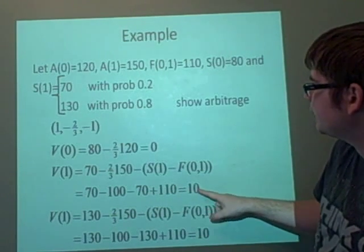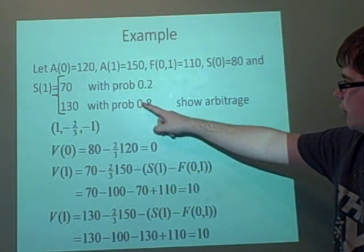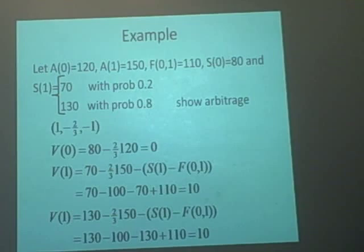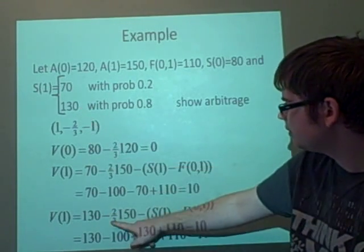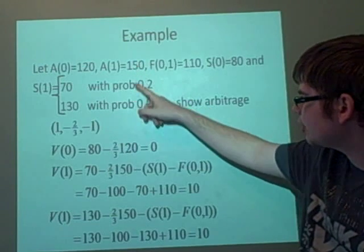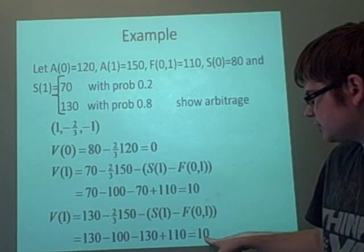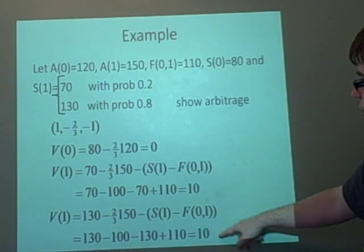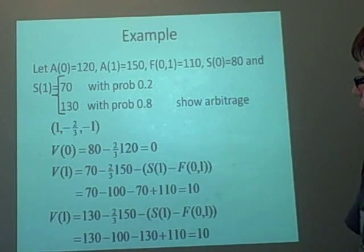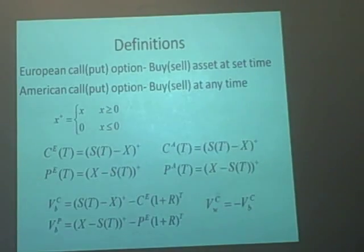On the other one below, we do again 130 because it goes up to 130 minus two-thirds is 150 because that's what we owe. And we've got the contract again, which gives us the value 10. So it's quite good in the fact that it generally always gives you the same amount. So 10 and 10. We've got a chance of making 10 either way. So that's an arbitrage situation.